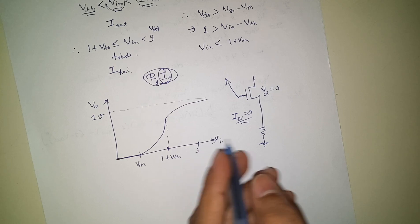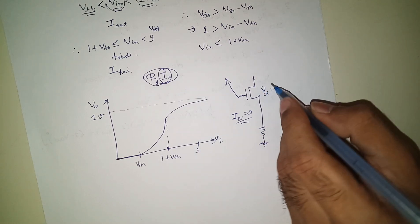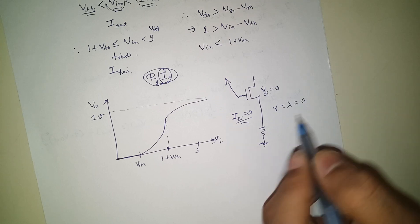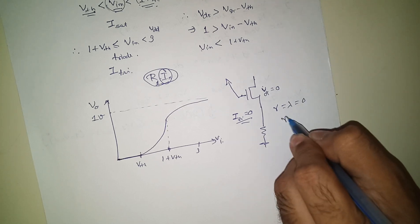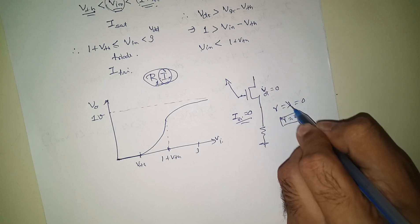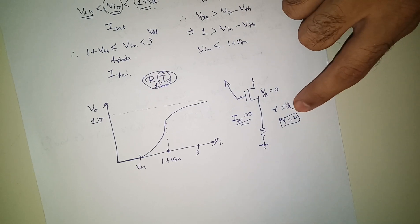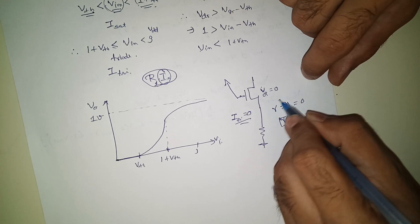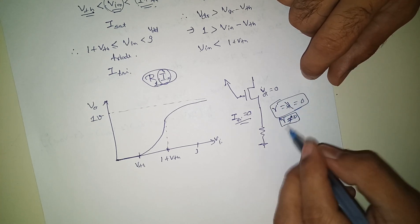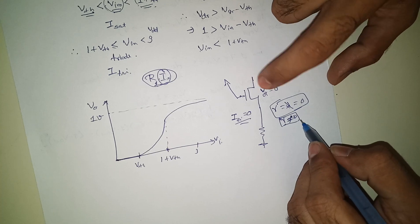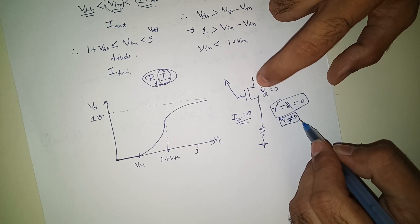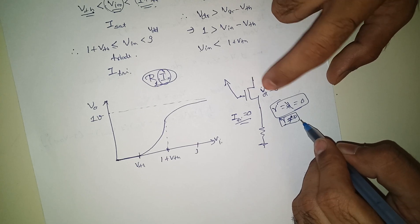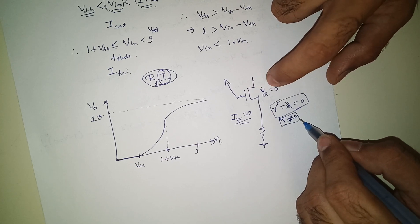At first glance you will think like that, but in fact this V_DS will not be zero because of body effect and channel modulation. Body effect will be the main reason for that. If you are considering here, we assume that body and channel modulation are not there. If you will consider the body effect, V_th is going to increase here. So you will never reach V_DS equals zero value.